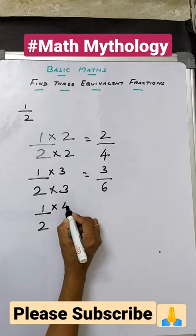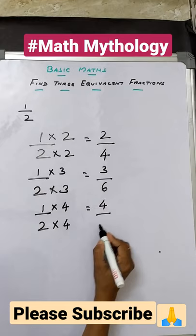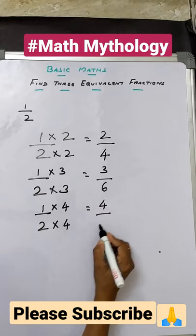On numerator and denominator, so we get 1 into 4 is 4 and 2 into 4 is 8. So your three equivalent fractions are 2 by 4, 3 by 6, and 4 by 8.